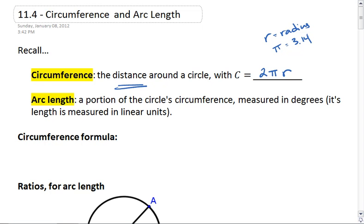The arc length is a portion of the circle circumference, which can be measured in degrees, while its length is measured in linear units.